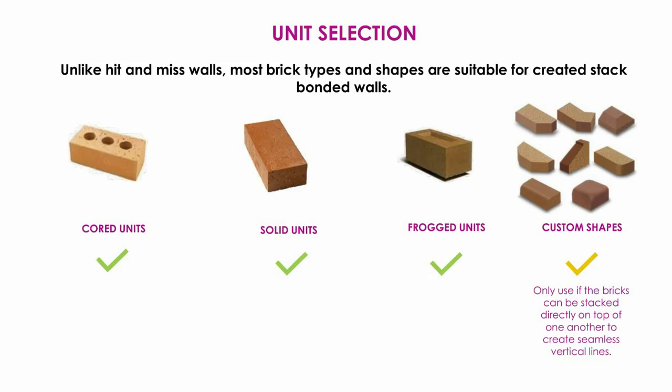Regarding the types of masonry units you can use in a stack bond — unlike some other configurations, there is no restriction here. You can use cored units, solid units, and frog units. You can even use custom shapes provided they can be stacked safely and in a structurally supported manner. This opens up many avenues for added textures and interesting patterns in your masonry walls.